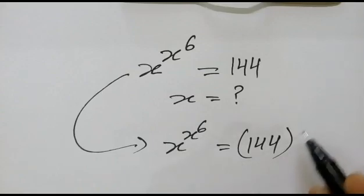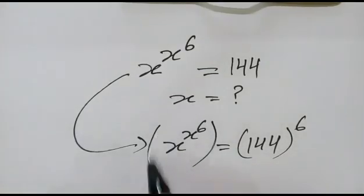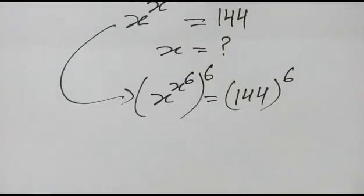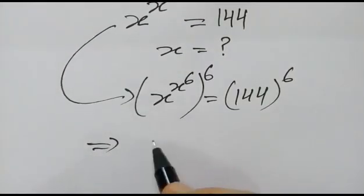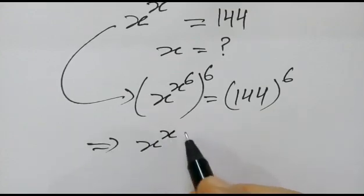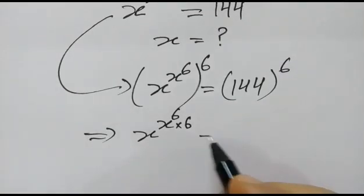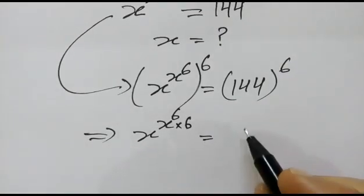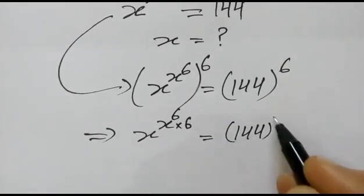If we multiply the power by 6, we have x to the power x to the power 6 into 6, is equal to 144 to the power 6.